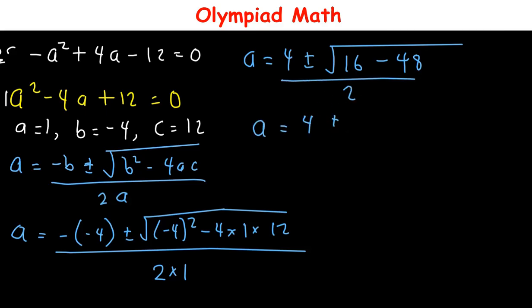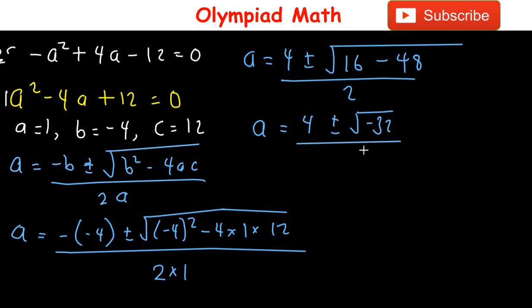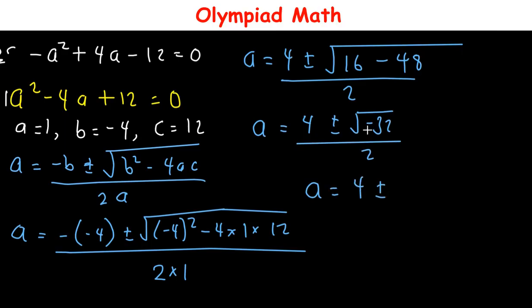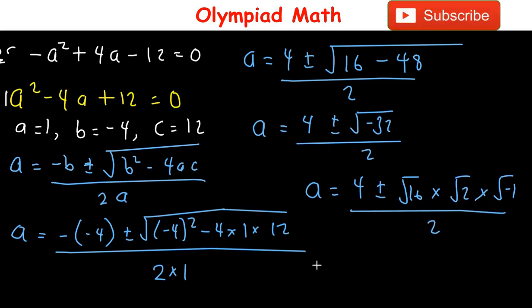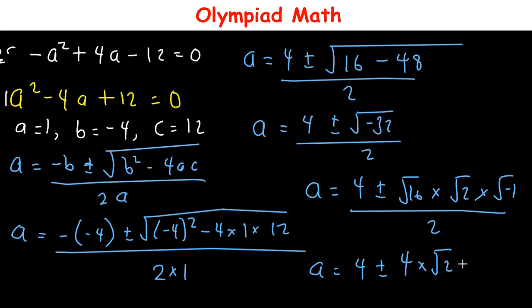We write √(-32) = √16 · √2 · √(-1) = 4√2 · i. So a = (4 ± 4√2·i) / 2.